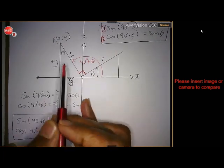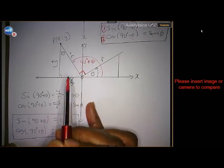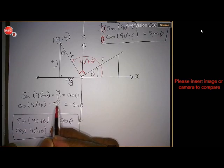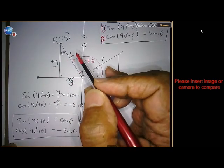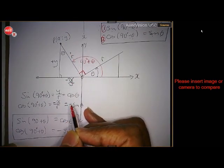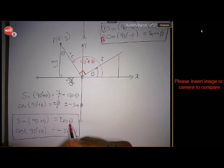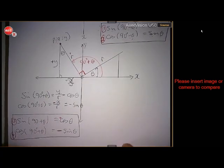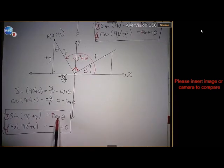The cosine of 90 plus theta is adjacent over hypotenuse — that's negative x over r. For the first time we have a negative. And from theta, x over r is the sine. So cosine of 90 plus theta is minus the sine of theta. To summarize: sin(90 + θ) = +cos(θ), and cos(90 + θ) = -sin(θ). Note: both values from 90 minus were positive, but here one is negative.